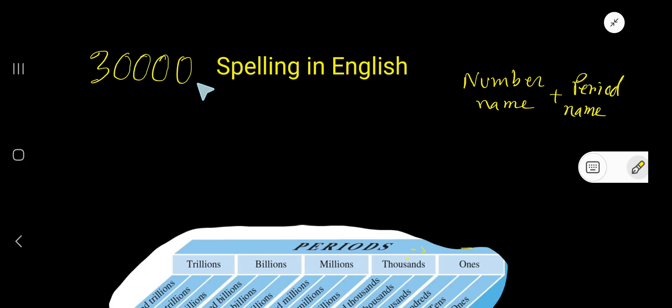30,000 spelling in English. To spell this number, we'll follow this method: number name plus period name. So rewrite this problem: 30,000. Look, three digits make a group which is called a period.